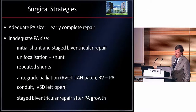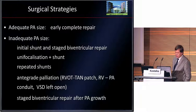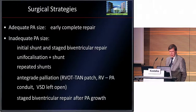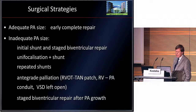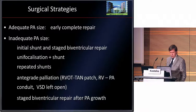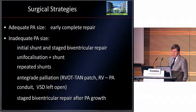What do we do if we have an adequate size of the pulmonary arteries? There is early complete repair in the neonatal period. In inadequate size of the pulmonary arteries, it is an initial shunt. If there is good adequate growth, then stage biventricular repair.